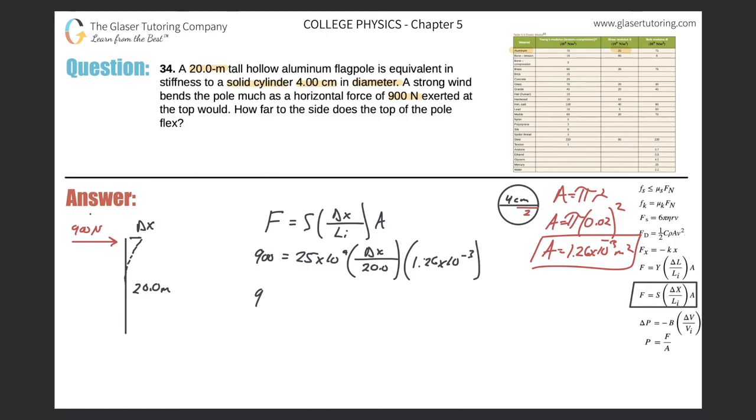Clean it up. So let's combine some terms here. So we've got 25 times 10 to the 9 times 1.26 times 10 to the minus 3. Divide that by 20. And we get a value of 1.58 times 10 to the 6, multiplied by delta x.